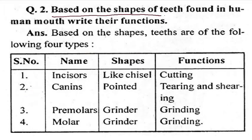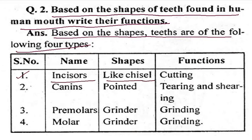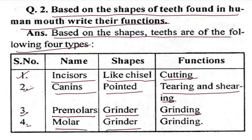Based on the shape of the teeth found in a human's mouth, write their functions. Teeth are of four types. First, we have the incisor — it is light, chisel-shaped, and used for cutting. Second is the canine. Third is the premolar — premolar means grinder. Fourth is the molar — molar is also for grinding.